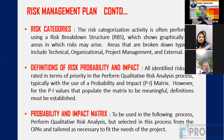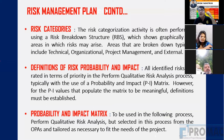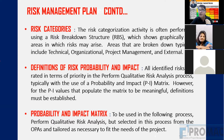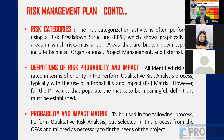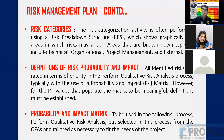Then we should define risk probability and impact. For example, we can say there is very high probability of this risk — 80% probability or 70% probability. We need to decide in the risk management plan: we will consider the risk to be high if the probability is more than 60%, or if the impact is more than a certain amount. We define what we consider high impact and what we consider low impact, and what probability is high versus low.